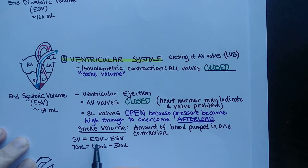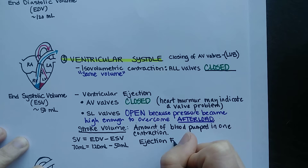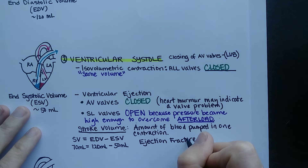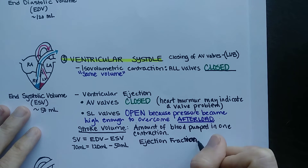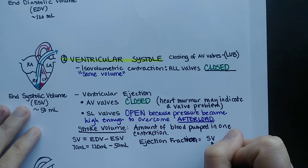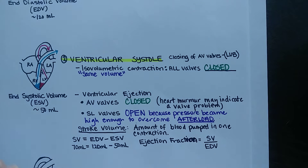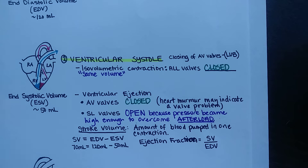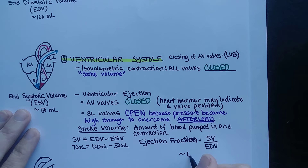Another important calculation is ejection fraction, which can be measured non-invasively with an echocardiogram. Ejection fraction equals stroke volume divided by end diastolic volume, giving a percentage. For example, 70 divided by 120 gives roughly 58%. On average, an ejection fraction of about 60 percent is normal, though it varies with exercise level — a range of 50 to 70 percent is typical.